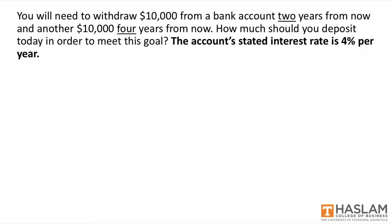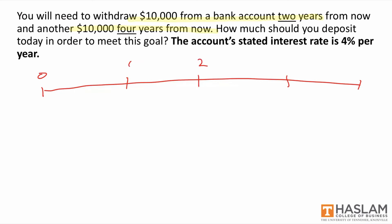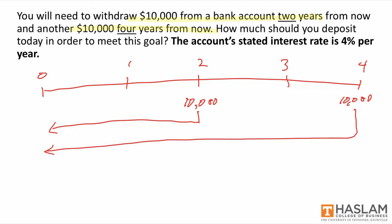Now let's simply combine the previous two examples. Suppose you need two withdrawals: one is $10,000 two years from now, and the second $10,000 four years from now. How much should you deposit today in order to meet the goal? This is the same type of present value equivalence problem as before, just a bit more complex. Drawing the timeline with four periods, both the time two and time four cash flows need to show up. We need to discount the time two cash flow two periods, and discount the time four cash flow four periods.